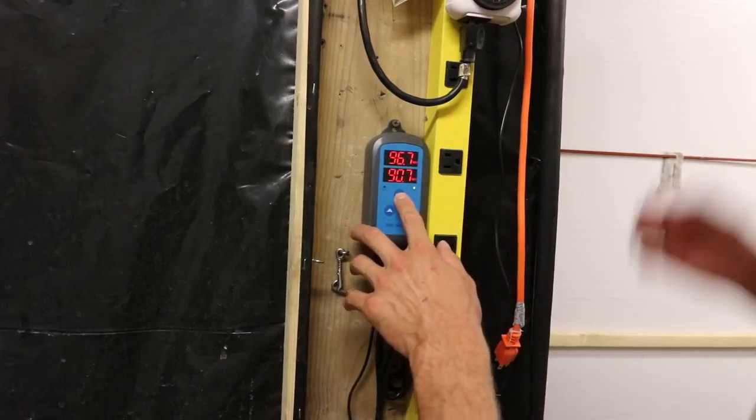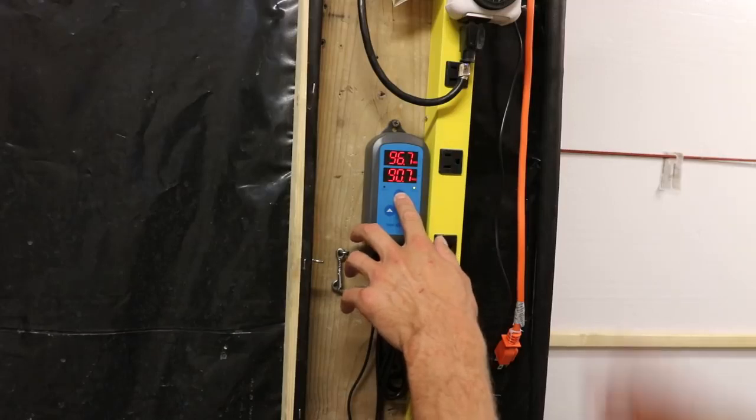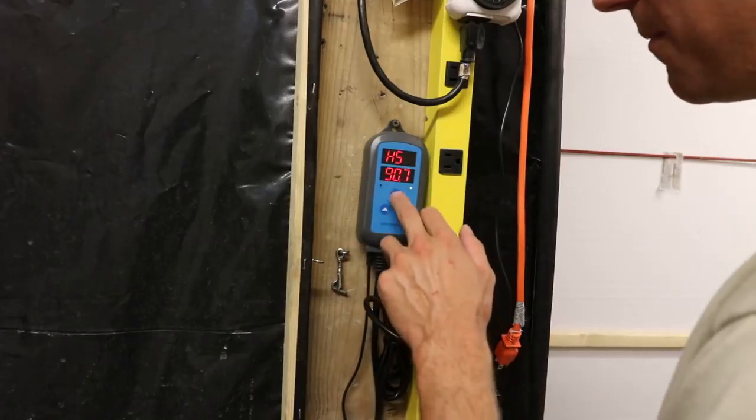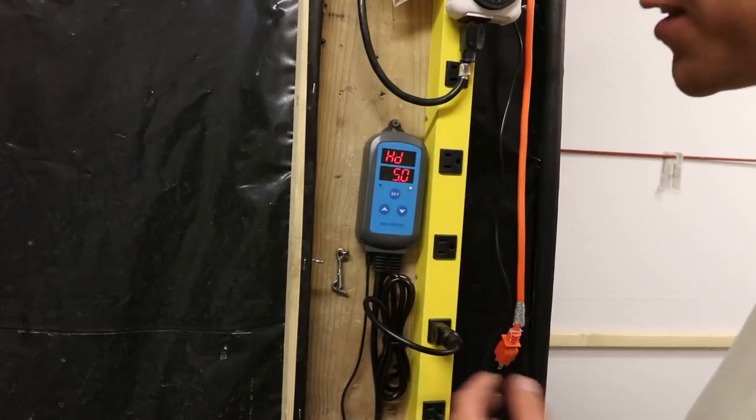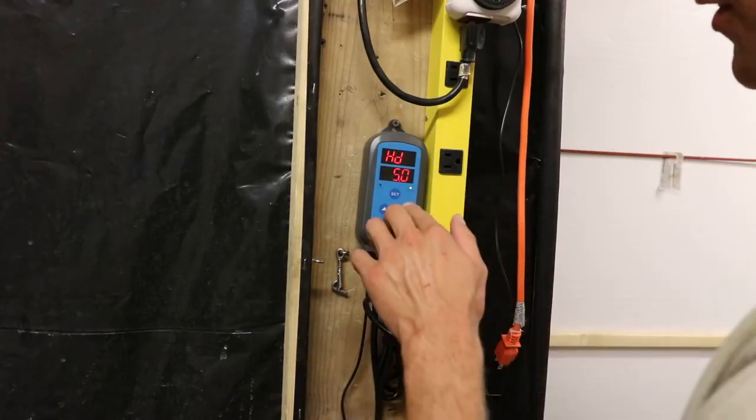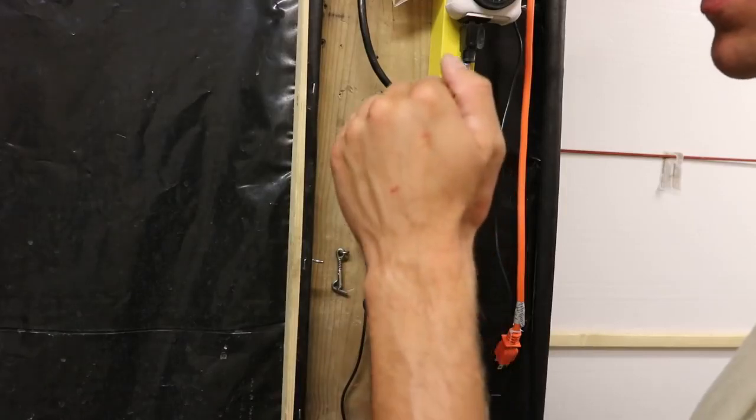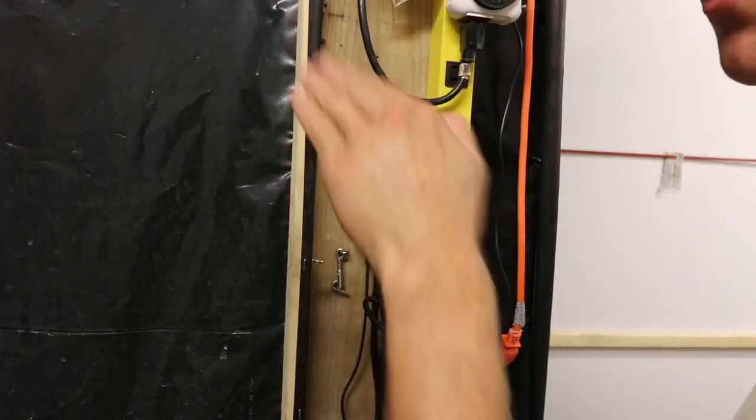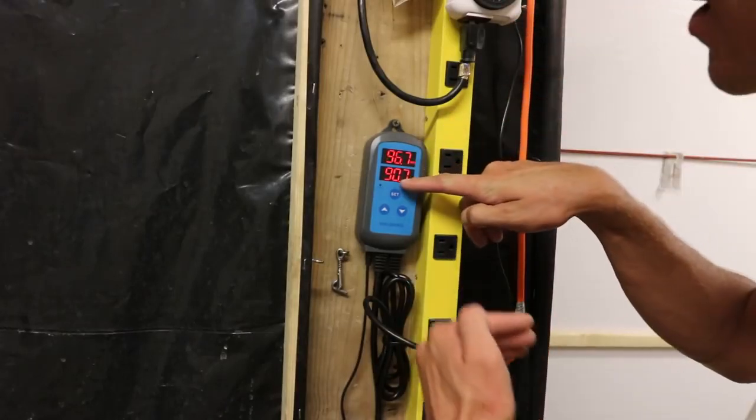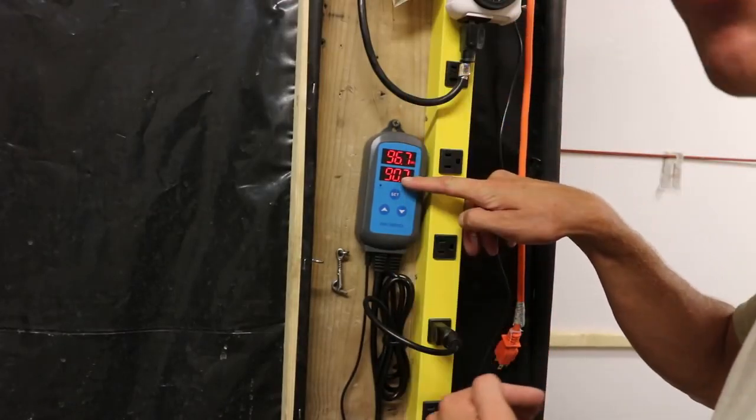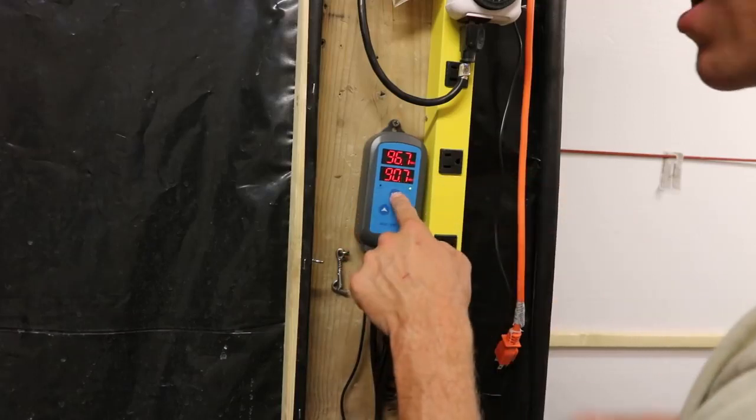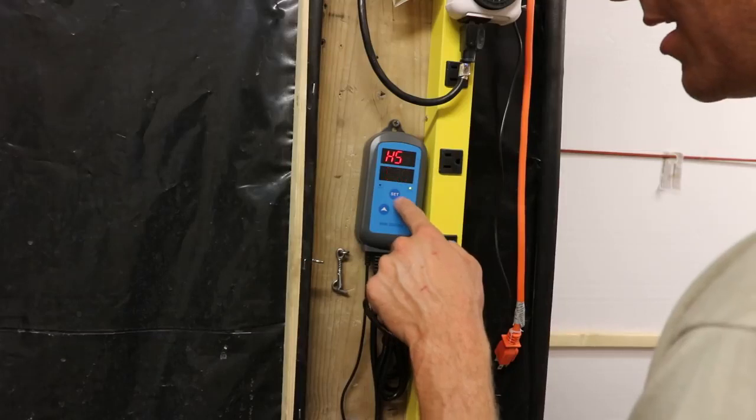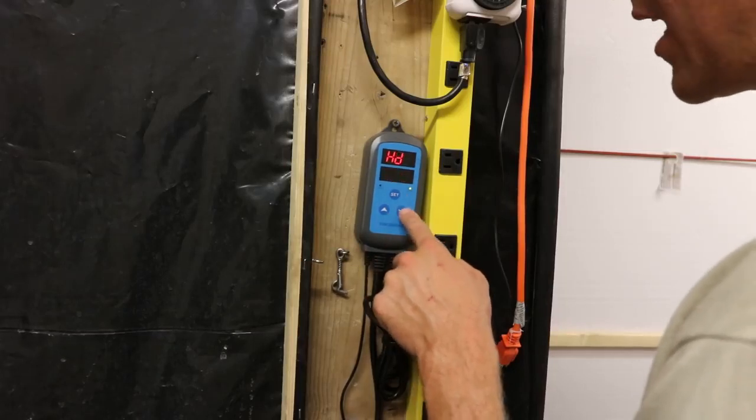So let's go through all the settings for my grow and what I would recommend for like an oyster mushroom grow. So high setting, we'll keep it at 90 for now. Hit set again. HD - that's your humidity differential. So that means if the humidity is, it won't kick back on until it's say 5 below. So if your setting's at 90, it won't kick back on until 85. We're going to set it a little bit less than 5. I don't want it swinging that much. You want it to swing a little bit but not that much. So we're going to set it at 3.